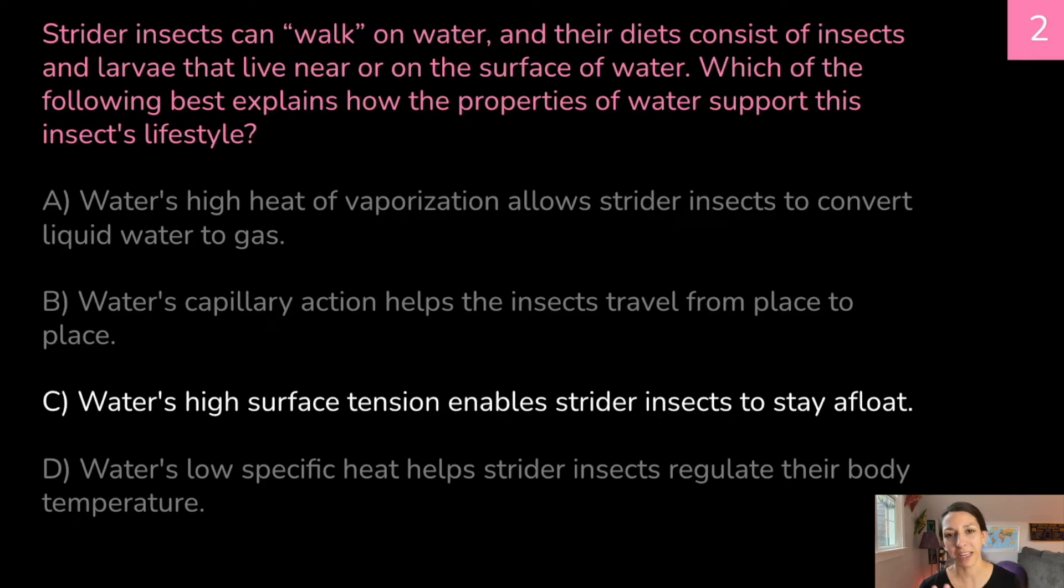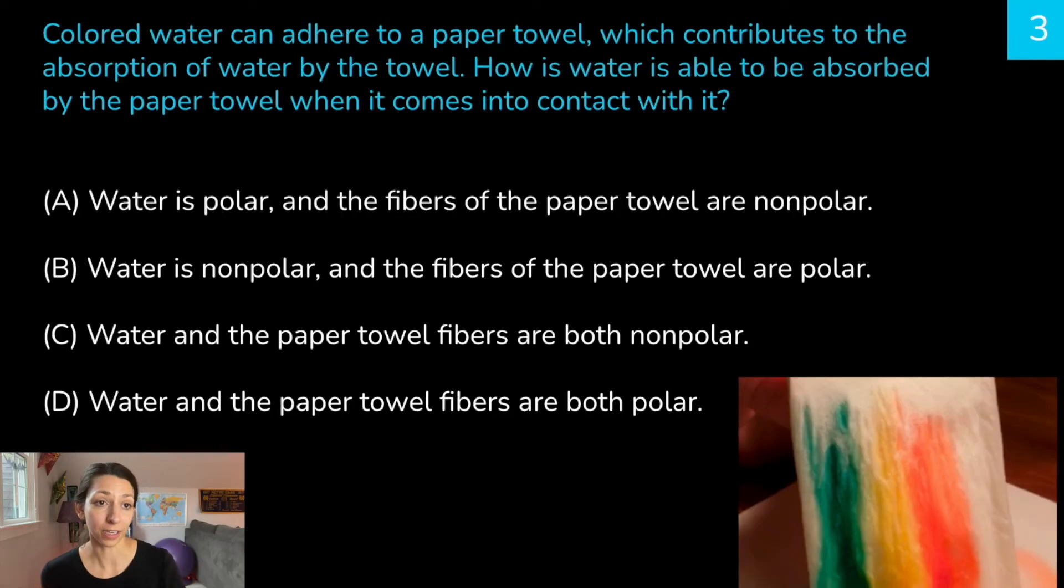Colored water can adhere to a paper towel, which contributes to the absorption of the water by the paper towel. How is water able to be absorbed by the paper towel when it comes into contact with it?